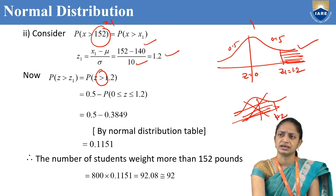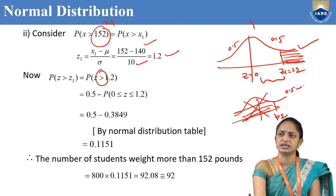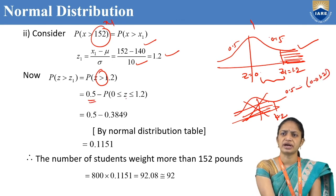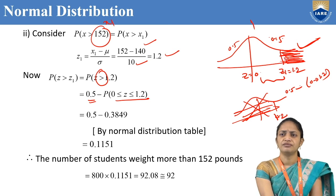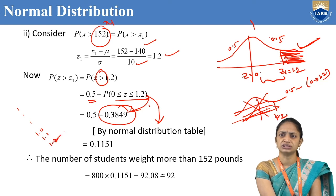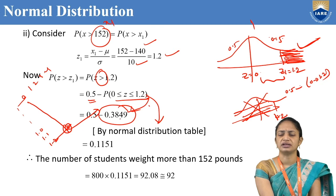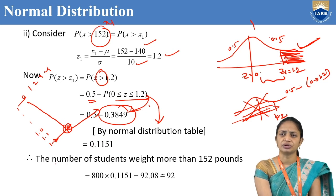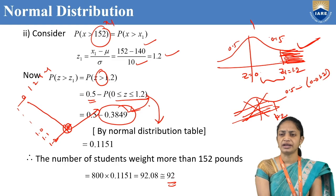From the normal distribution table, looking up 1.2 with column 0, we get 0.3849. So 0.5 minus 0.3849 equals 0.1151. Therefore, the number of students who weigh more than 152 pounds is 800 into 0.1151, which equals approximately 92 students. Thank you.